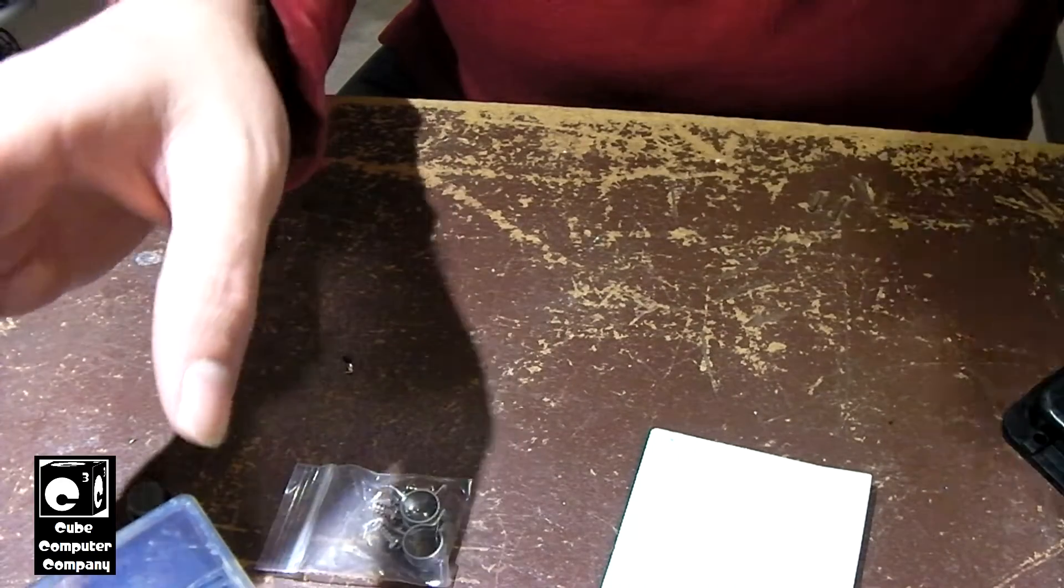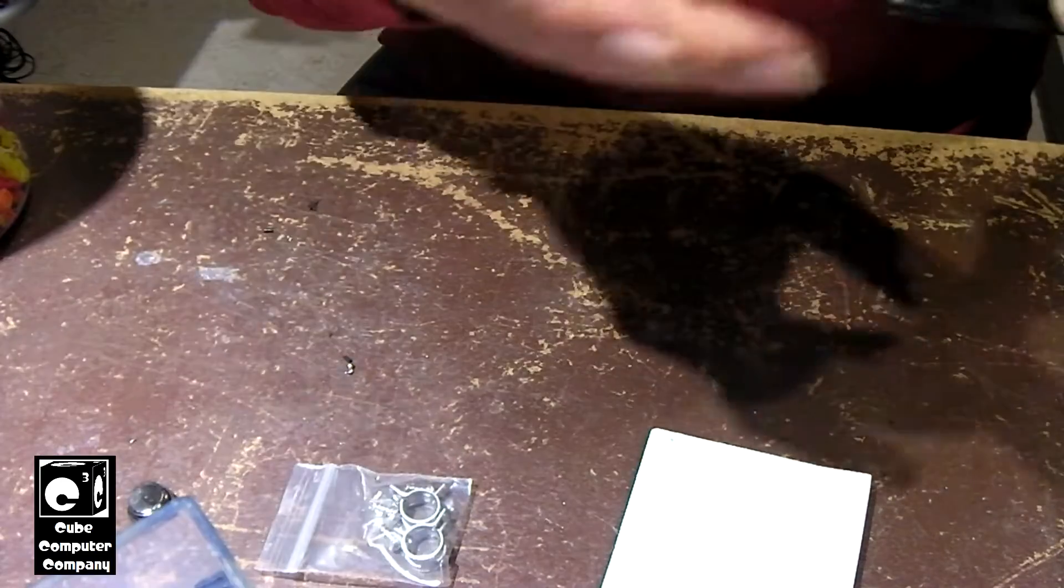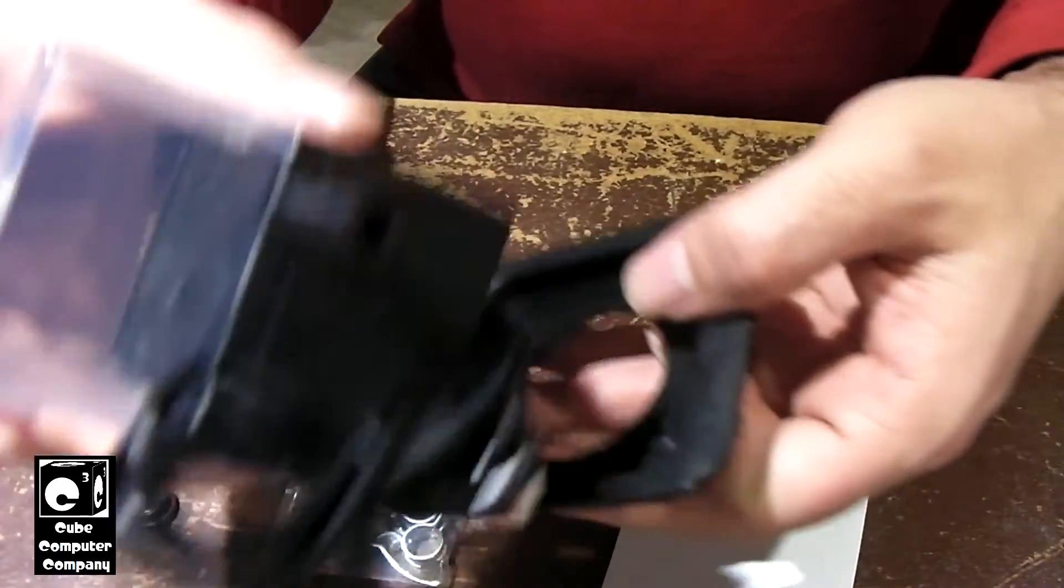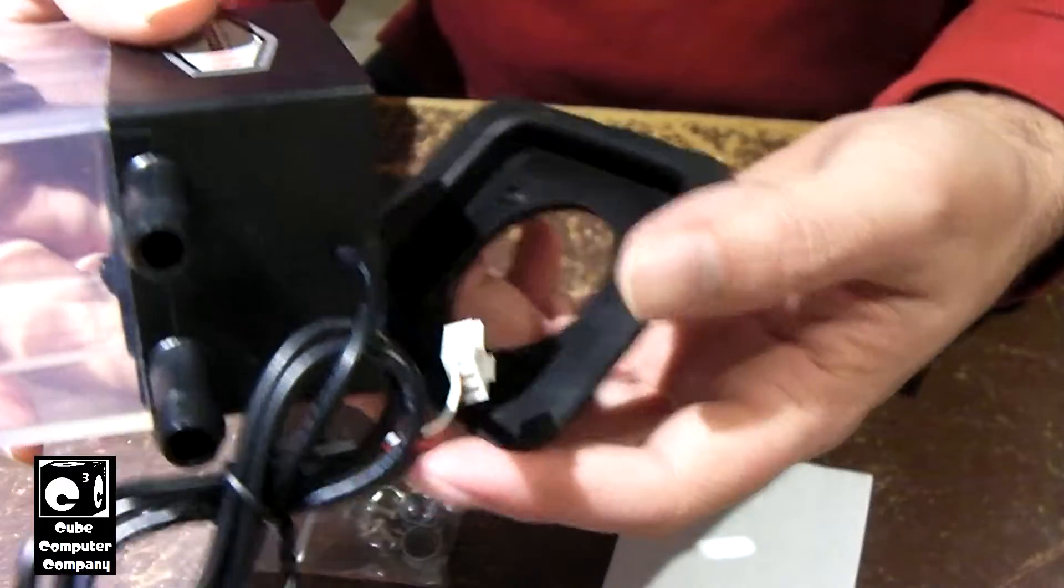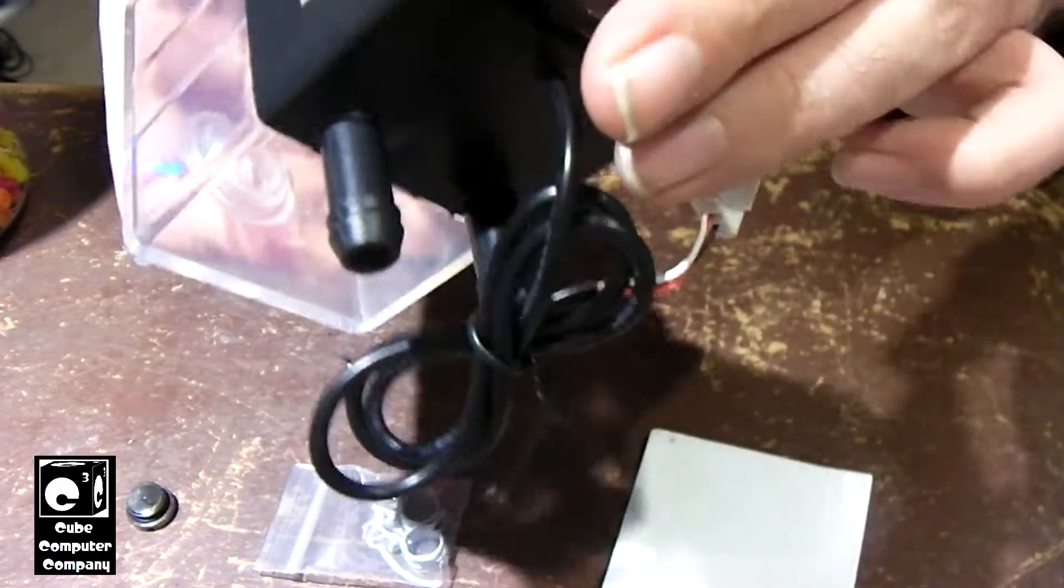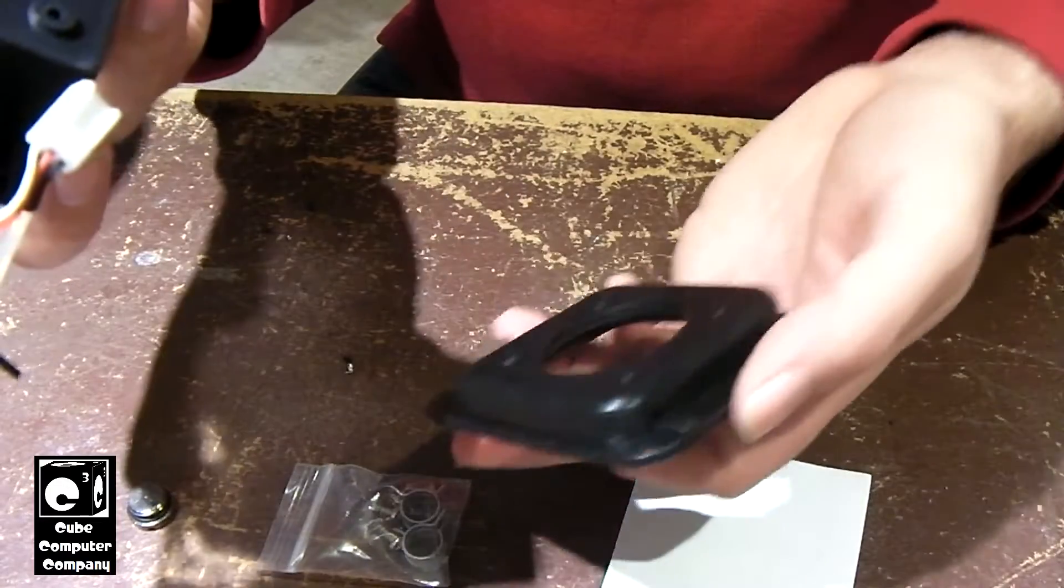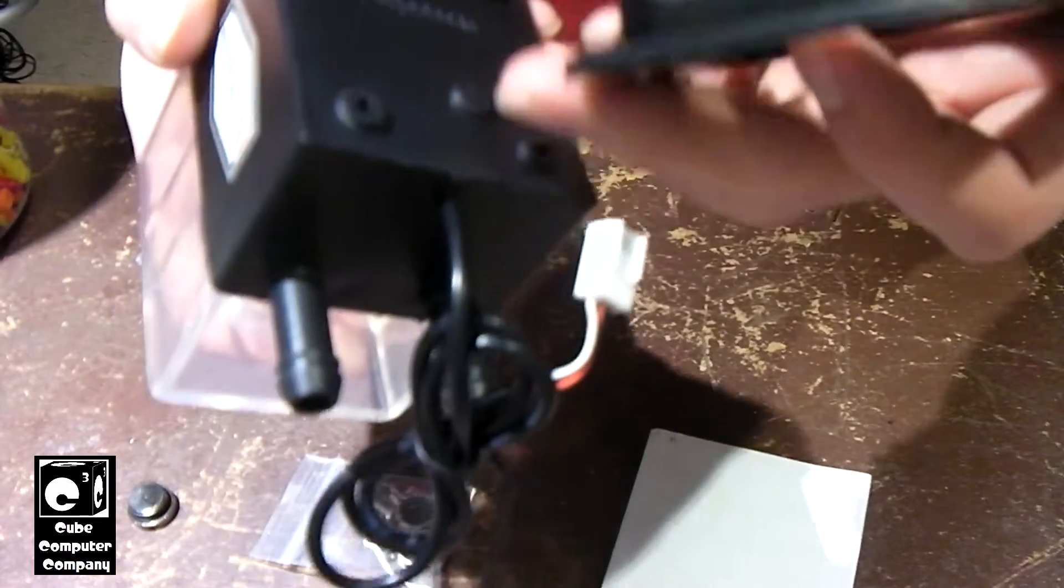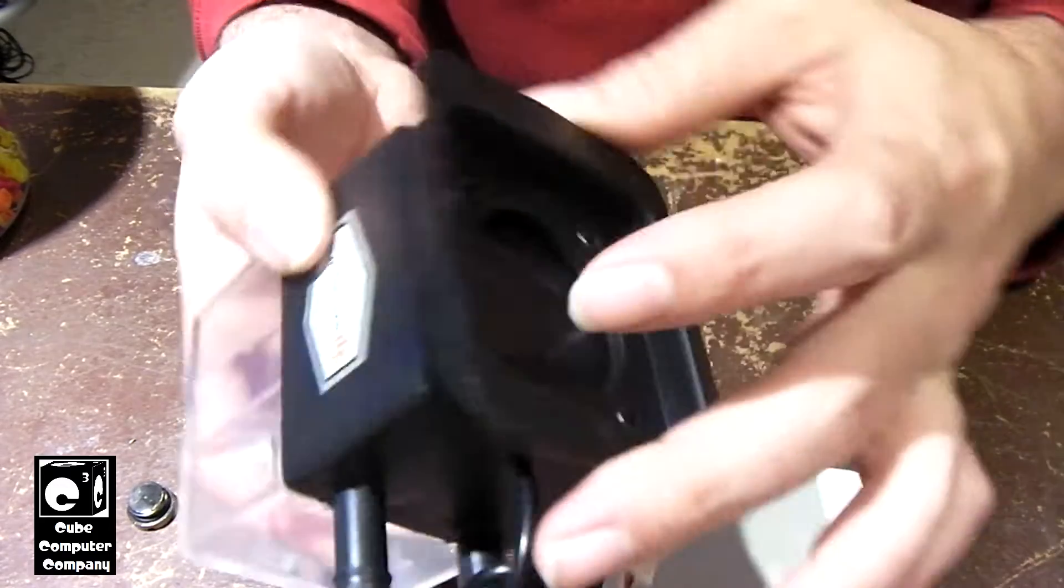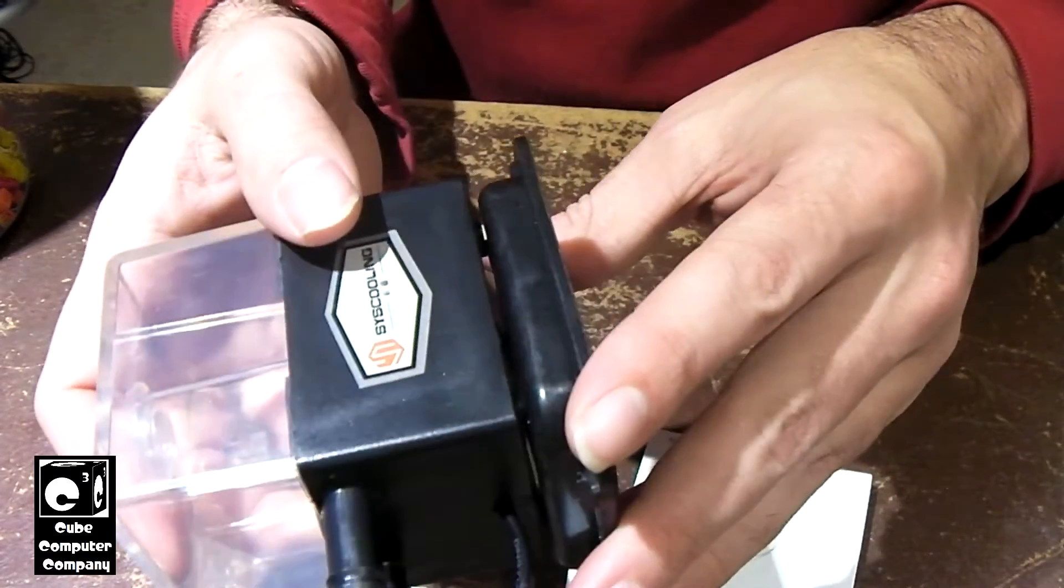They give you a variety of different things. You've got this rubber mount for sound dampening I do believe. The way this works is they gave you four screws. And I think this is literally a means of being able to secure it down to your case or wherever.